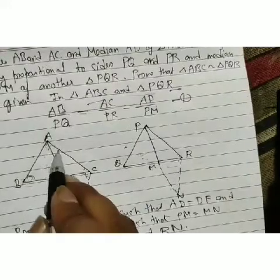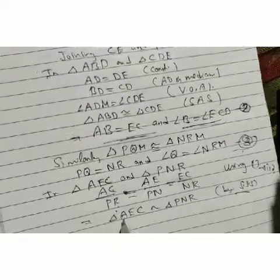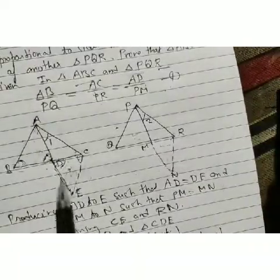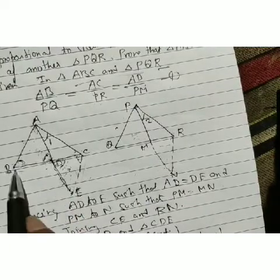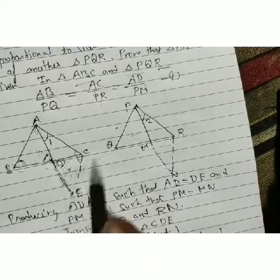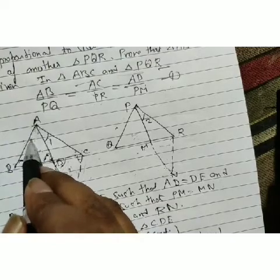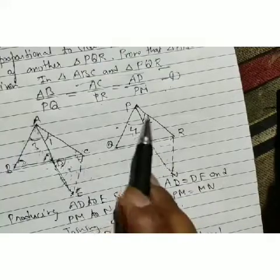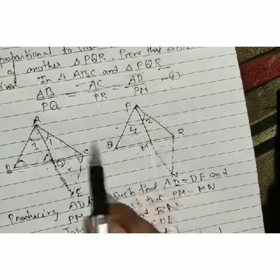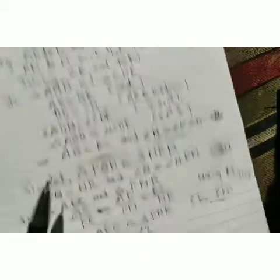We have now proved that angle A = angle P. This was our required result. In triangle ABC and PQR, we have AB/PQ = AC/PR (given) and angle A = angle P (proved). By SAS similarity criteria, triangle ABC is similar to triangle PQR.